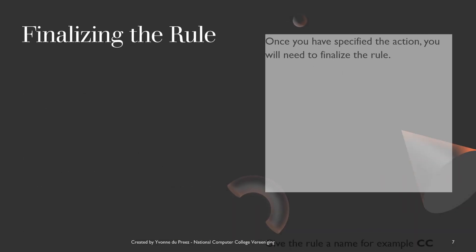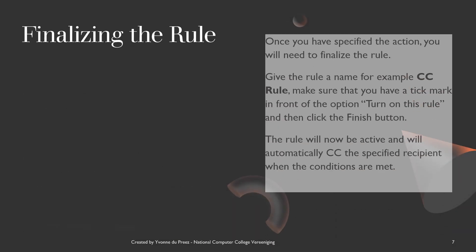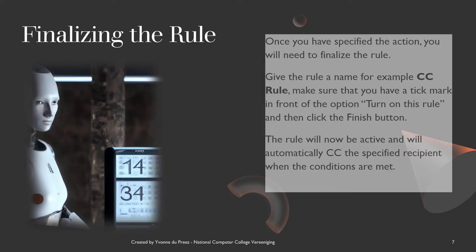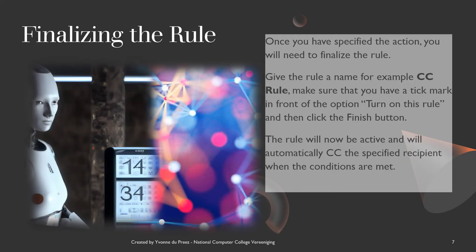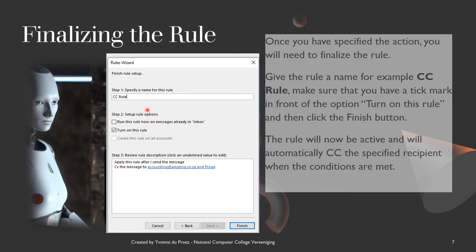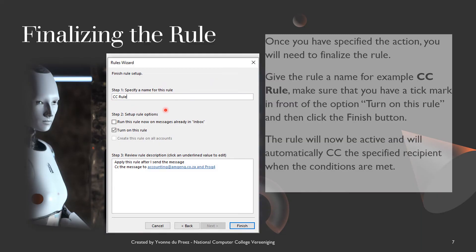We are now ready to finalize the rule. Give the rule a name — for example, CC Rule. Make sure that you have a tick mark in front of the option for turning on this rule, and then click the Finish button.